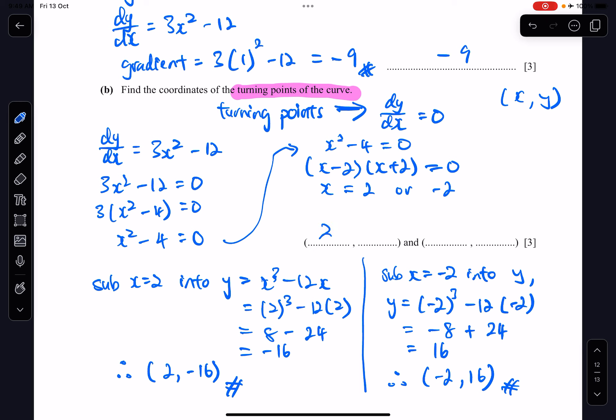So let's put it down. 2 negative 16 and negative 2 comma 16. Alright. Thank you.